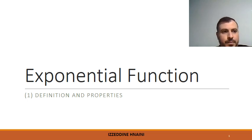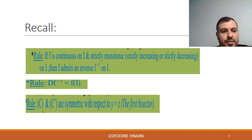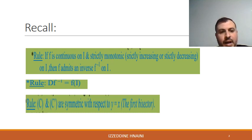Exponential Function. First, we want to make a revision on the existence of the inverse function. We know that for the inverse function to exist, the function must be continuous and strictly monotonic.